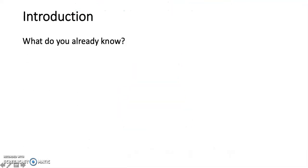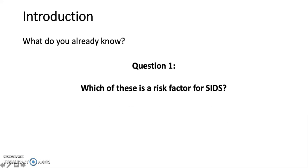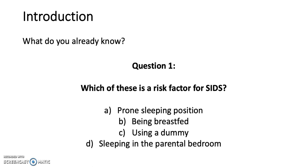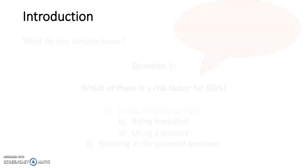Let's start by asking a few questions to see what our baseline knowledge is. Question 1: Which of these is a risk factor for SIDS? A. Prone sleeping position. B. Being breastfed. C. Using a dummy. Or D. Sleeping in the parental bedroom. The answer is A, prone sleeping position.